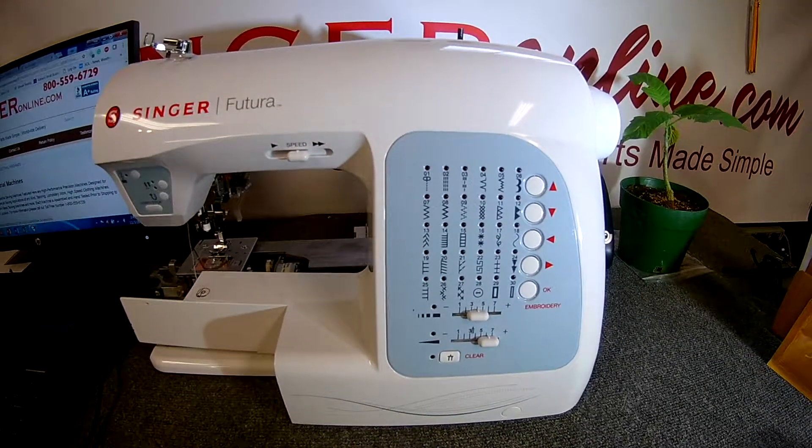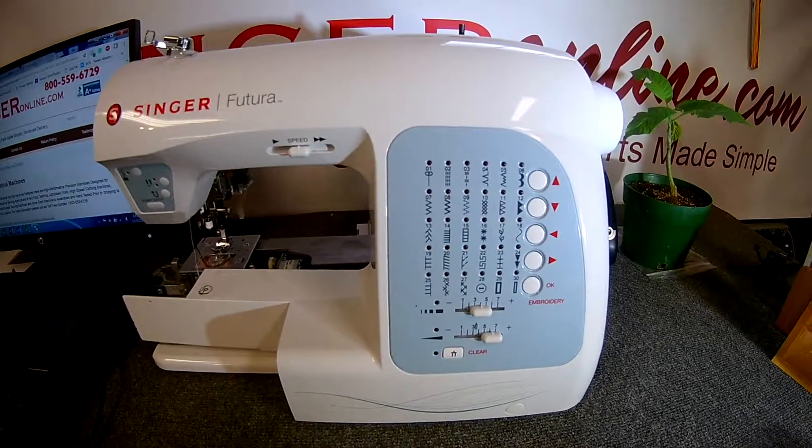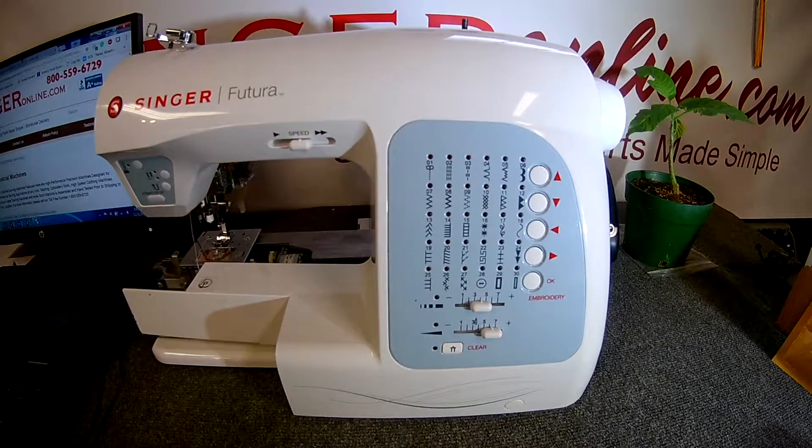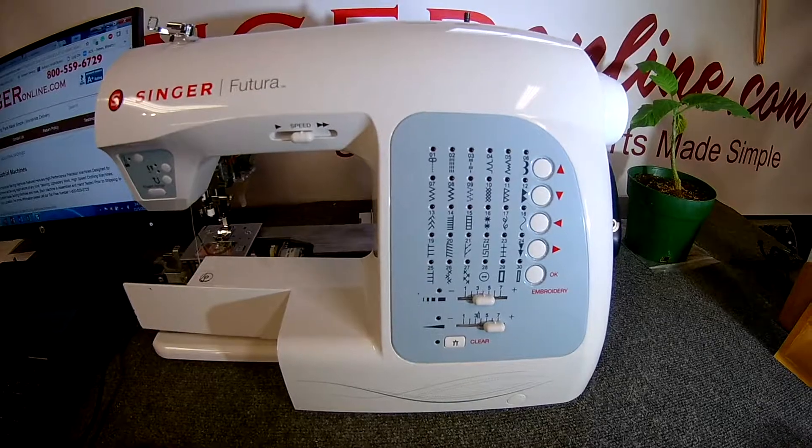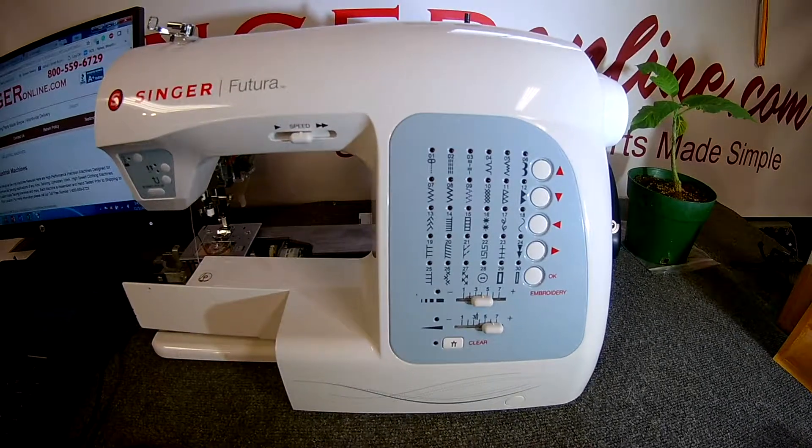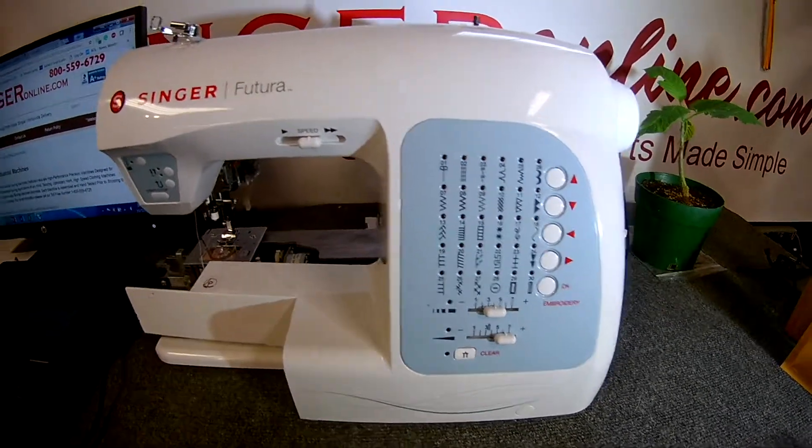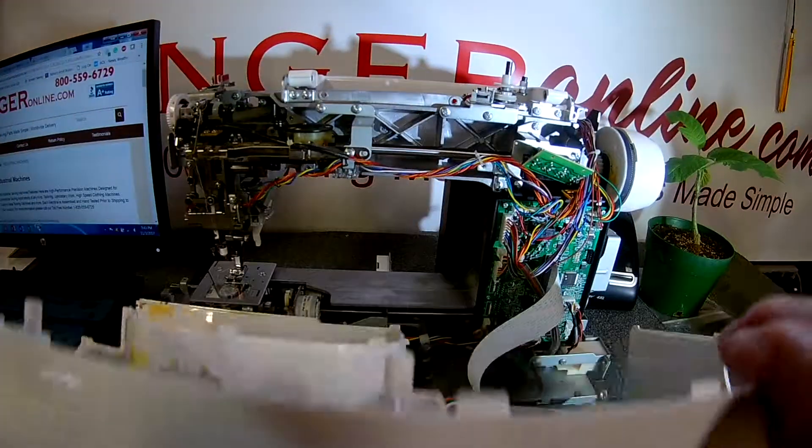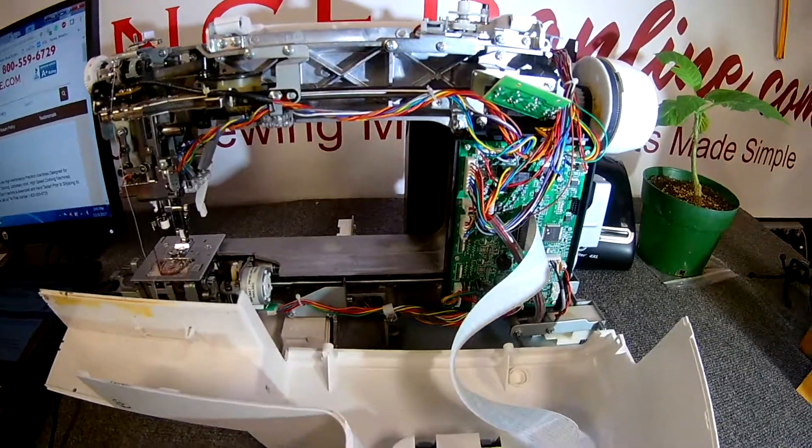This video is brought to you by SingerOnline.com. We're looking at a Singer XL400 embroidery sewing machine with a bad speed sensor. The speed sensor tells the main PC board how fast the motor is running.